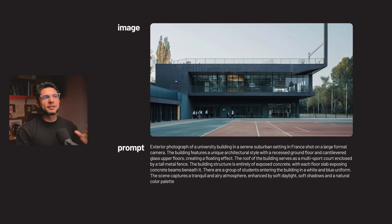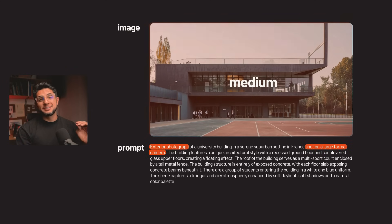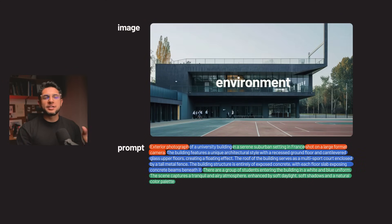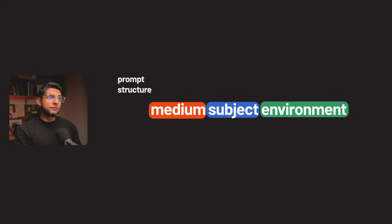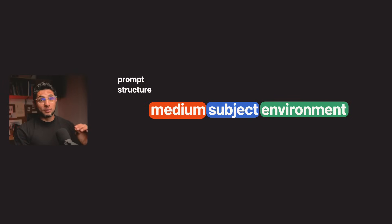In Mid Journey, crafting the perfect prompt involves a clear understanding of three key elements: medium, subject, and environment. By simplifying our prompts to focus on these aspects, we can guide the AI more efficiently, ensuring that our images are not only beautiful but also precise. This approach allows us to maintain coherence throughout our images and maximize Mid Journey's powerful capabilities. Let's break down each of these elements one by one.